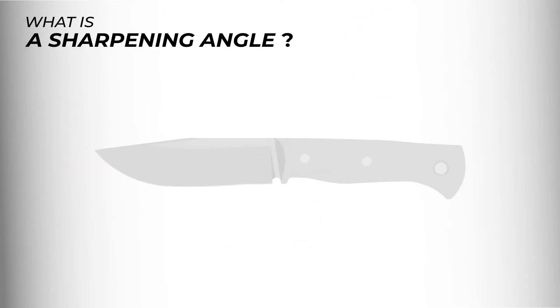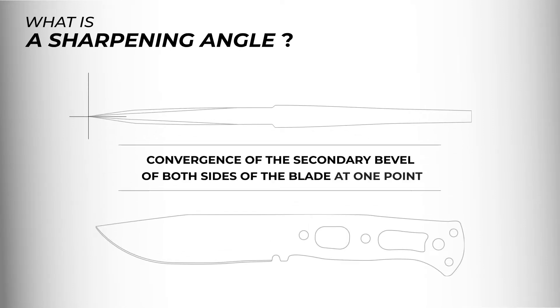First of all, let us answer the question, what exactly is a sharpening angle? This is the convergence of the secondary bevel of both sides of the blade at one point. Now, how do we find the sharpening angle at these two points?